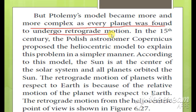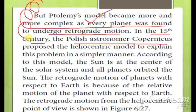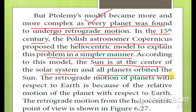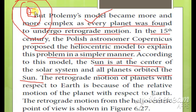Ptolemy's model became more and more complex as every planet had to undergo the epicycle to show retrograde motion. In the 15th century, Polish astronomer Copernicus proposed the heliocentric model to explain this problem more simply. According to this model, the sun is at the center of the solar system and all the planets orbit around the sun. Previously the geocentric model had the earth at the center with all planets including the sun revolving around it.